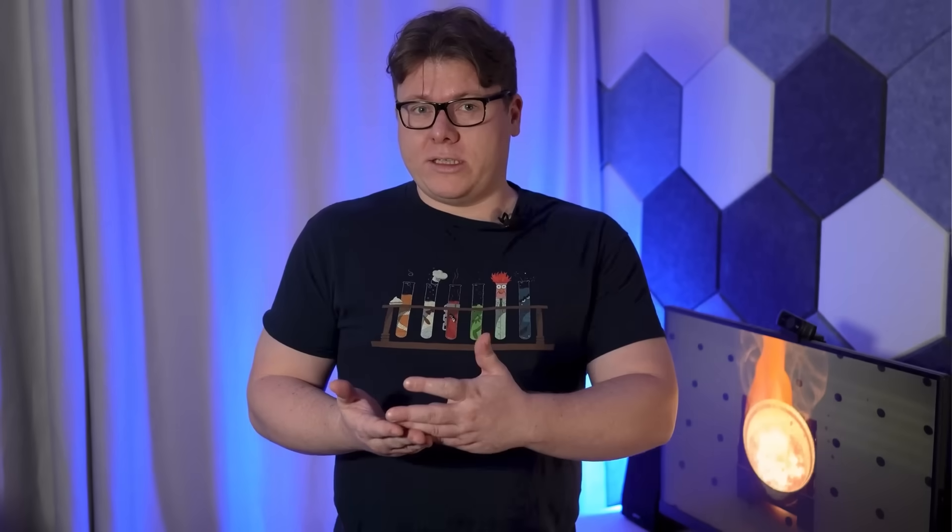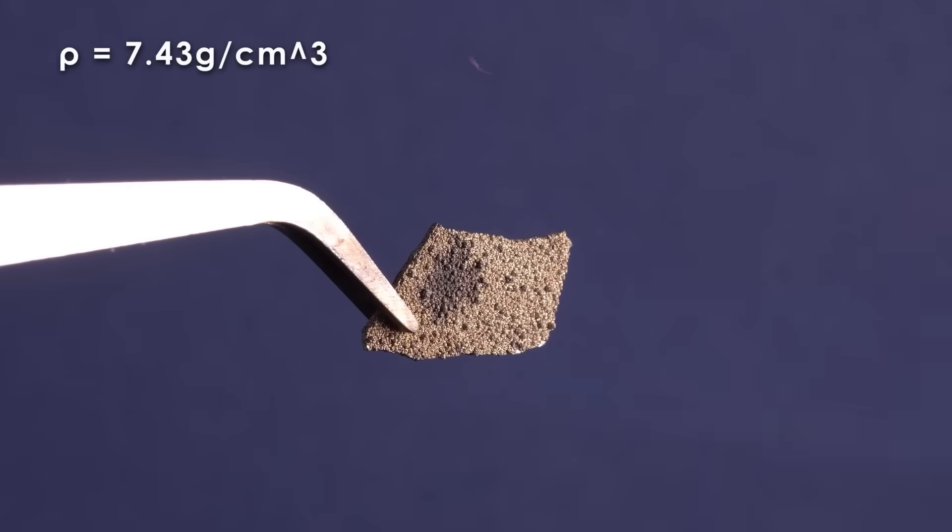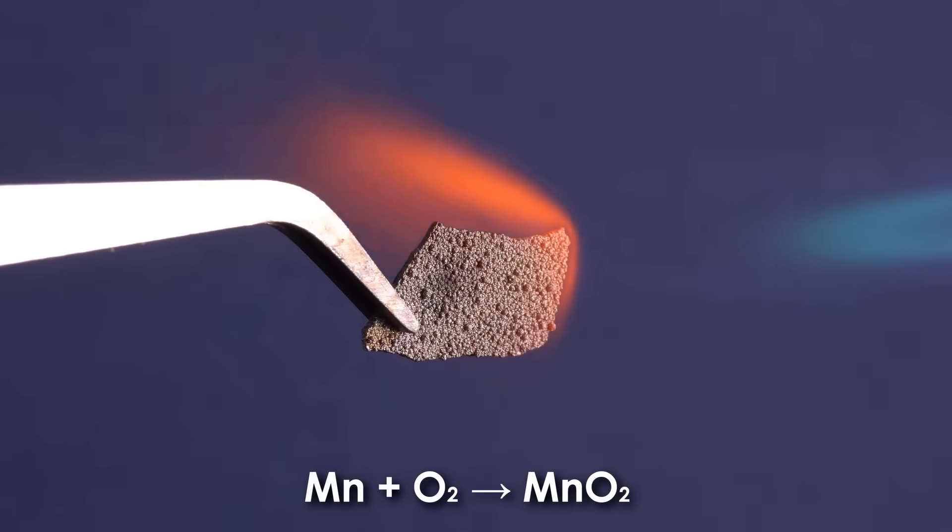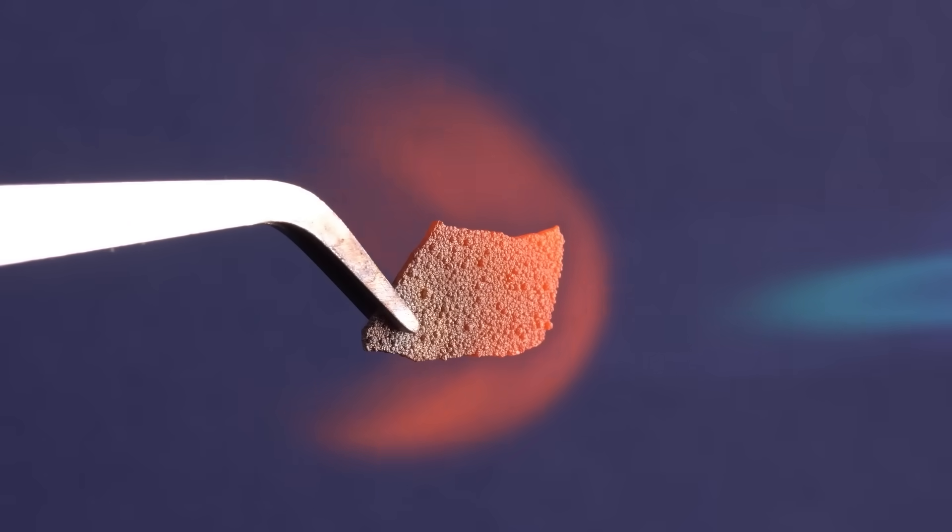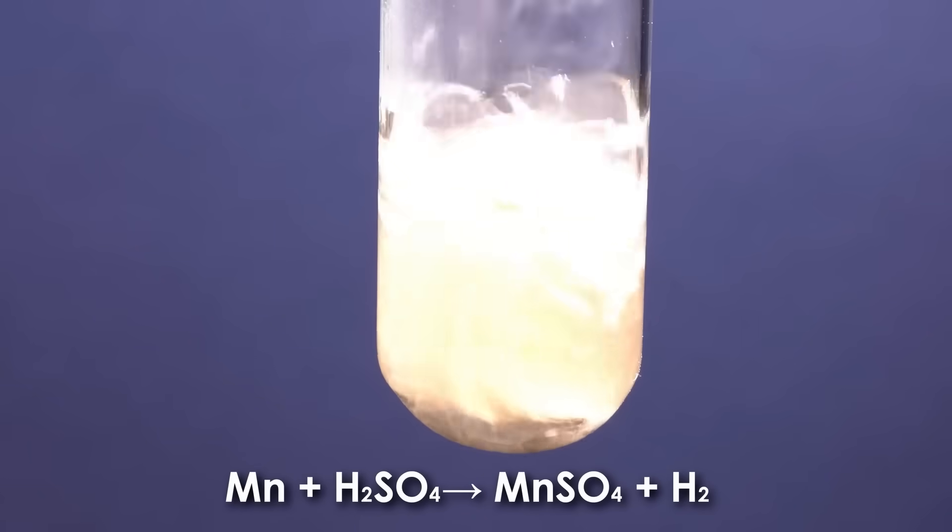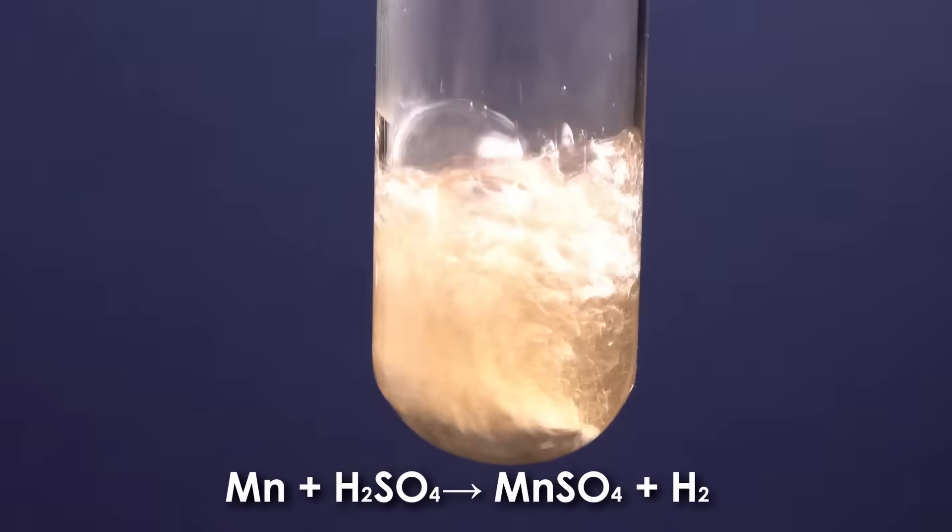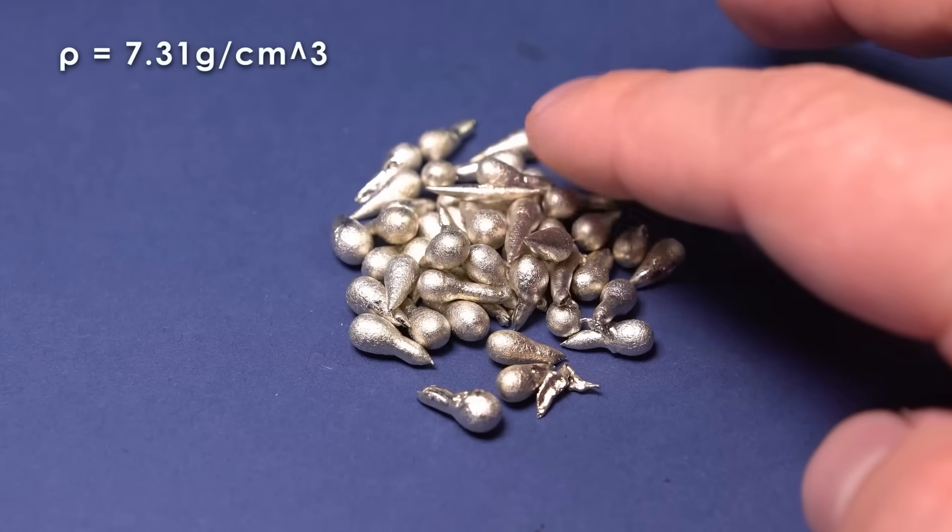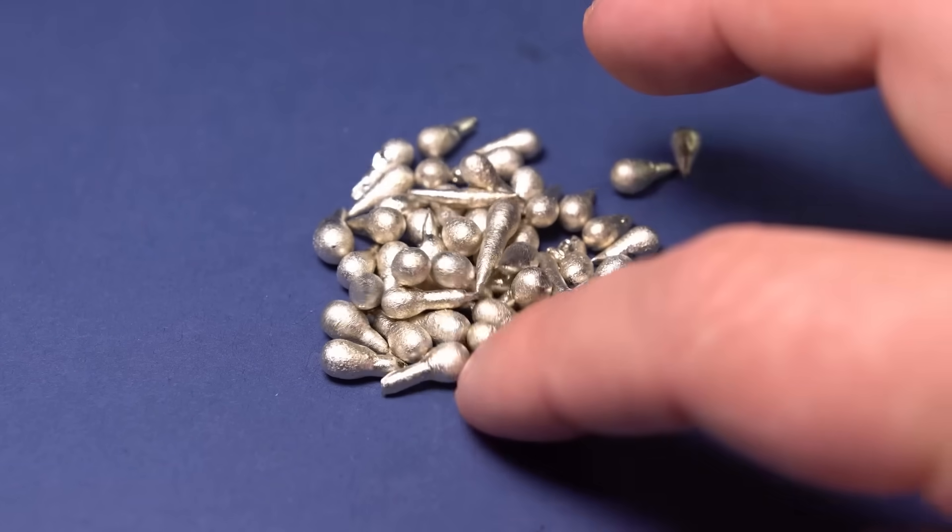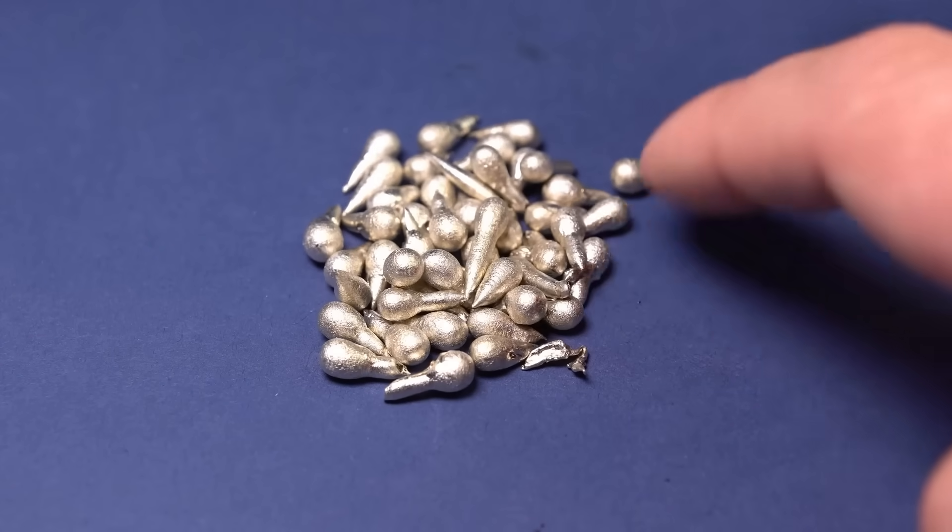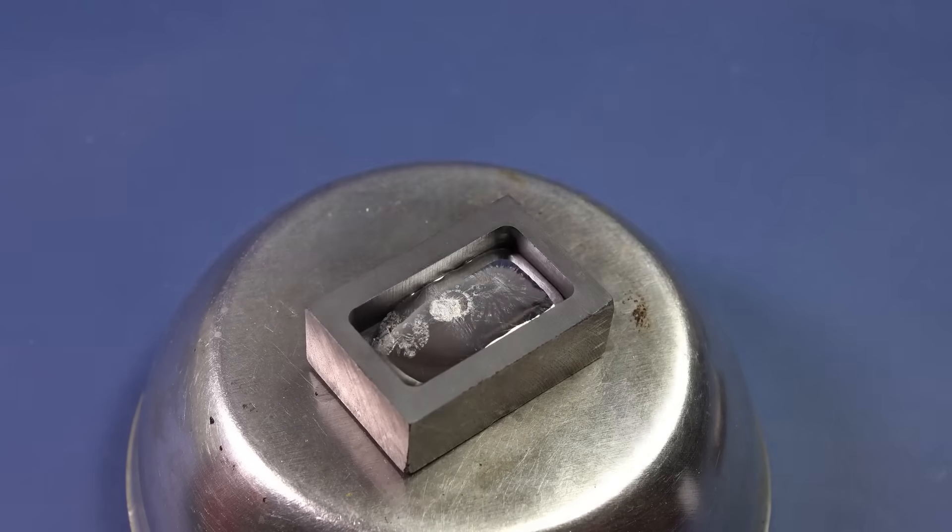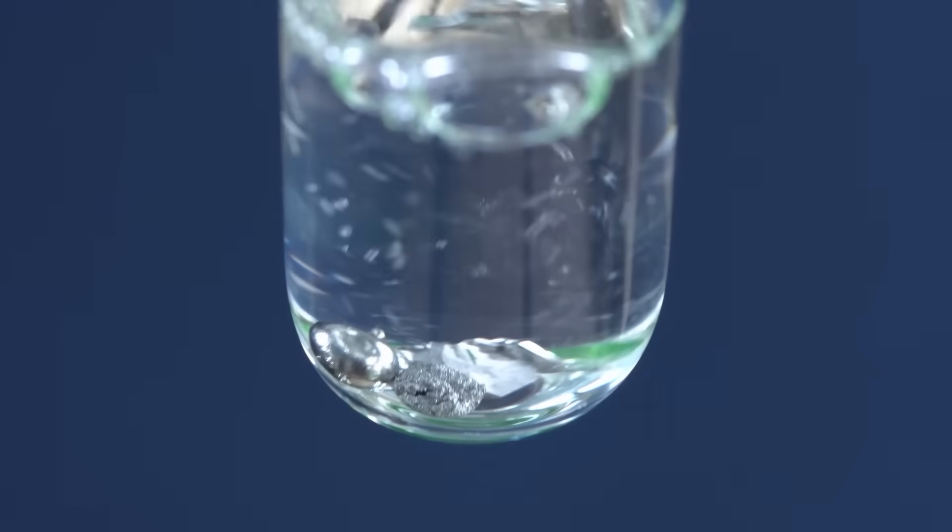Interestingly, the next densest metal after lead is silver, which is only a gram lighter per cubic centimeter, but at the same time, it already differs drastically in its physical and chemical properties. For example, its melting point is already 640 degrees higher than that of lead, and at the same time, its chemical stability is also greater.